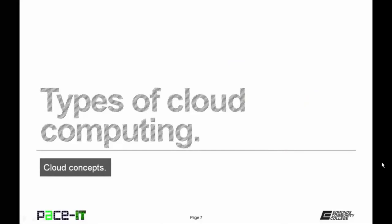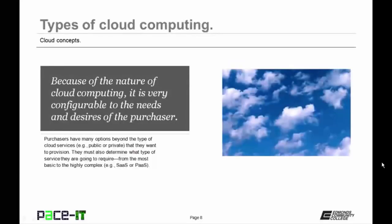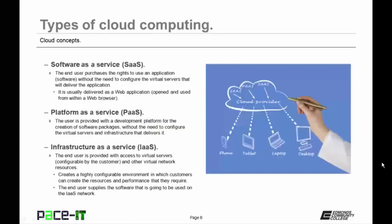Now let's discuss types of cloud computing. Because of the nature of cloud computing, it is very configurable to the needs and desires of purchasers. Purchasers may determine what type of services they are going to require, from the most basic to the highly complex. There is software as a service, or SaaS — the end user purchases the rights to use an application without the need to configure the virtual servers that will deliver it. SaaS is usually delivered as a web application, opened and used from within a web browser.